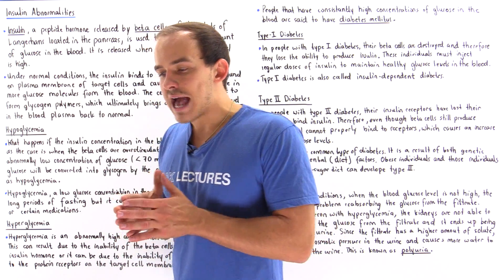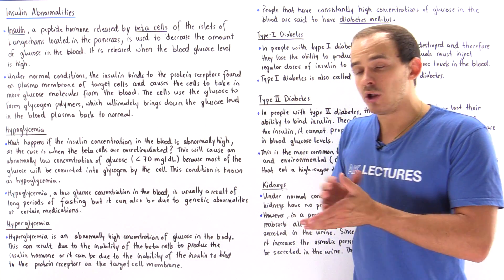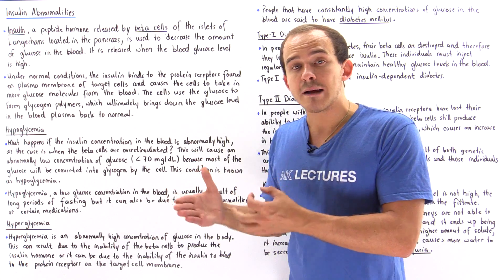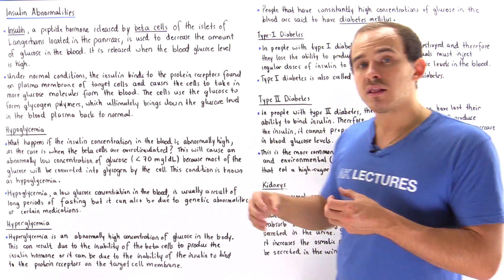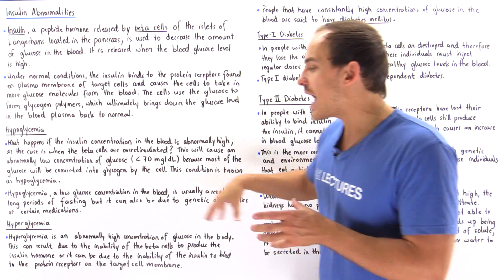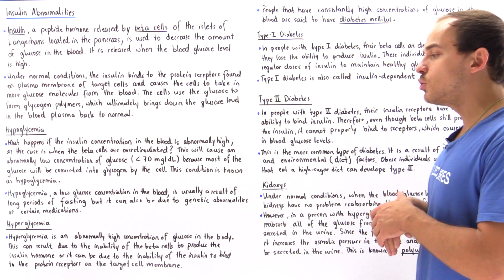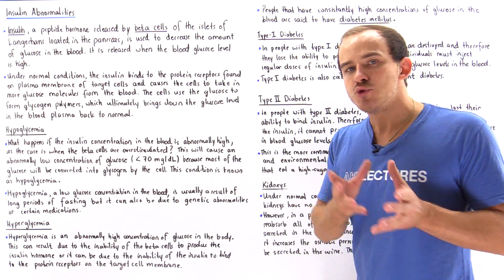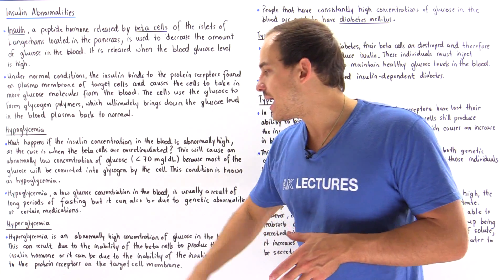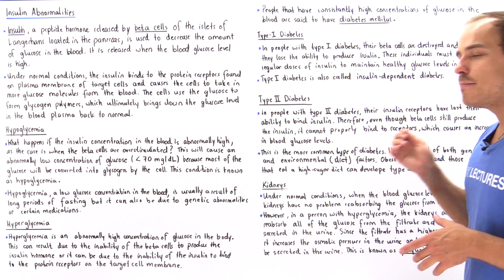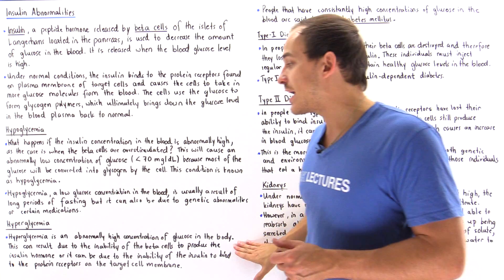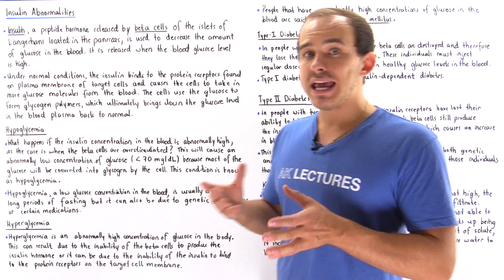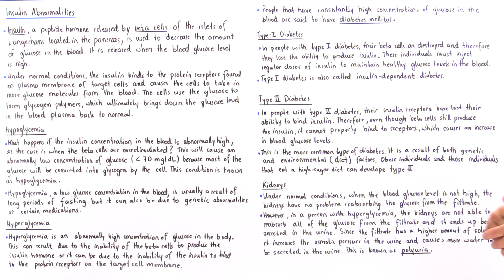Another cause of hyperglycemia is when insulin is unable to actually bind to the protein receptor on the target cell membrane. If the interaction between the insulin and the receptor isn't functional, glucose molecules cannot move into our cells, creating a high concentration of glucose inside our blood plasma. Hyperglycemia can result from either insufficient insulin production by the beta cells or the inability of insulin to bind to the receptor on the target cell membrane.